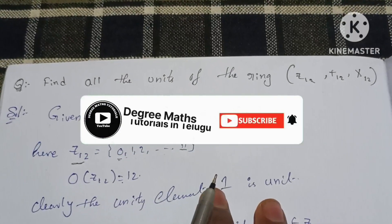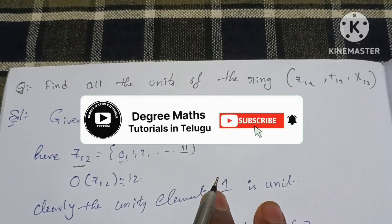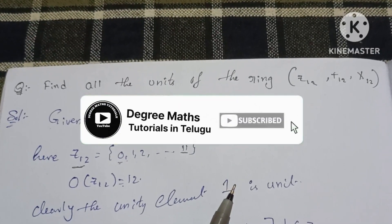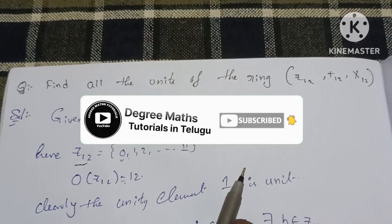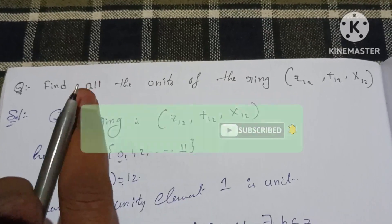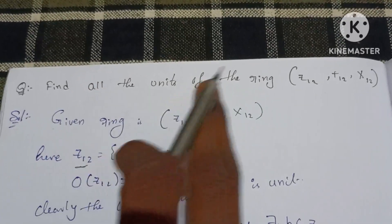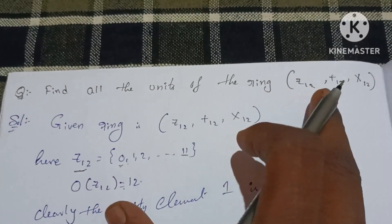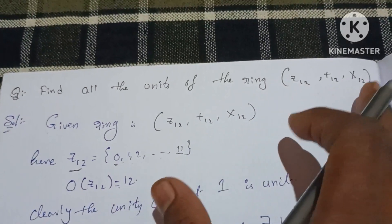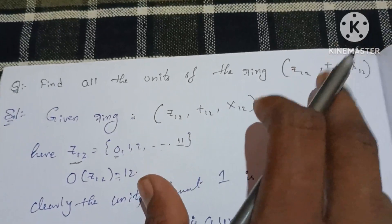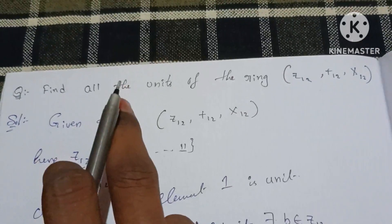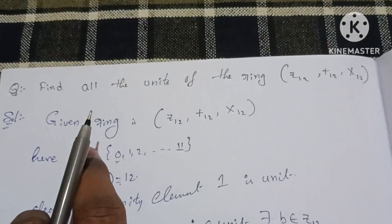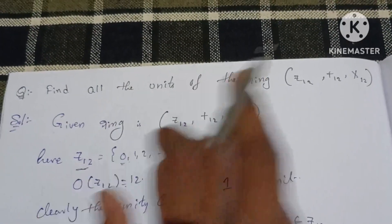In this video, I have a request for my channel. This video is going to find all the units of the ring Z₁₂, where the ring is equal to all the units.